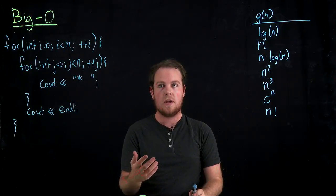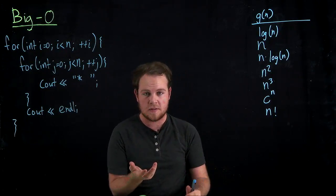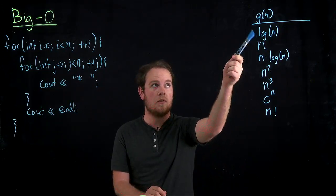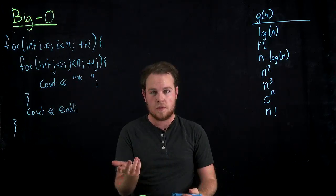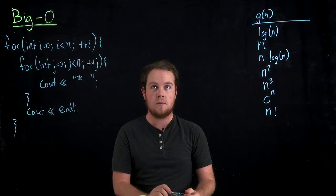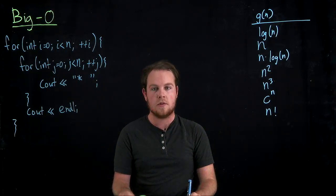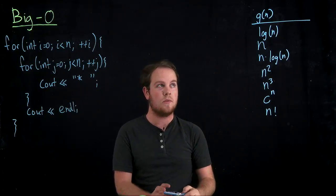This can occur when we're dividing the problem set into smaller pieces every single pass. This is commonly found using recursive algorithms. For instance, the one you've seen so far is binary search because the data is already sorted. And you're going to divide the list in half every time. So you get a logarithmic runtime of algorithms.